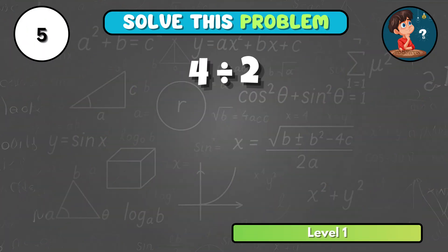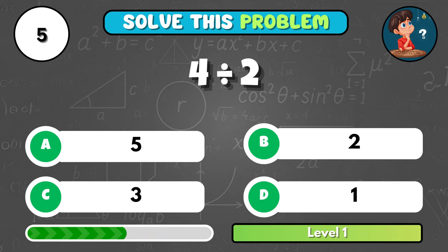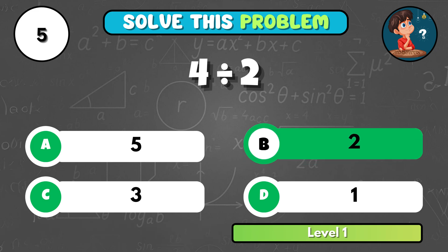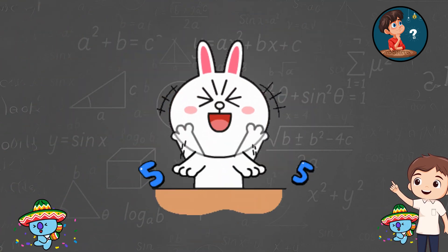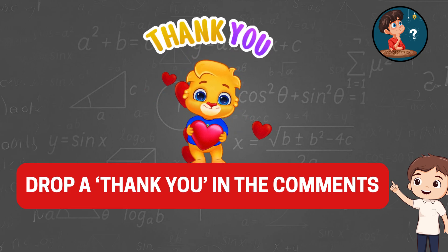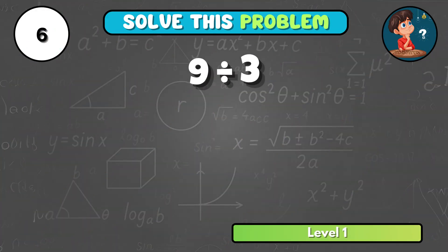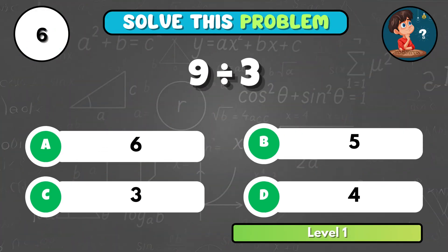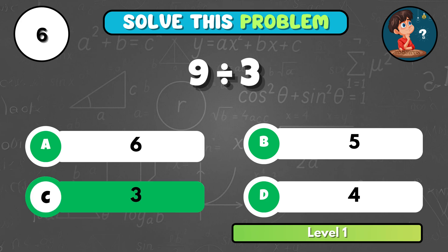How about four divided by two? That gives B, two. If you aced the first five questions in this easy round, make sure to drop a comment and let us know how you did. What do you get when nine is divided by three? It's C, three.